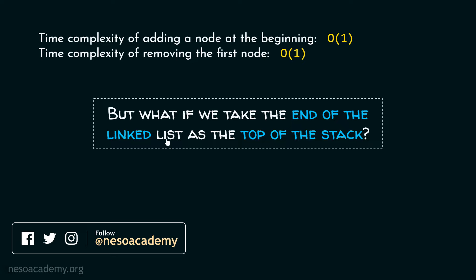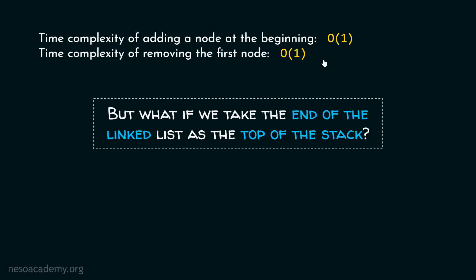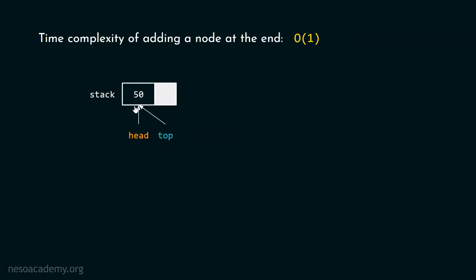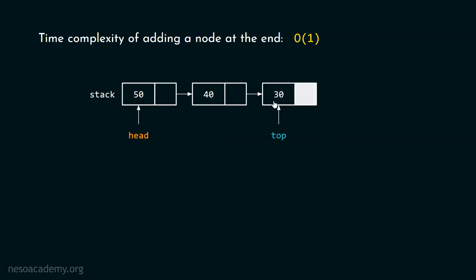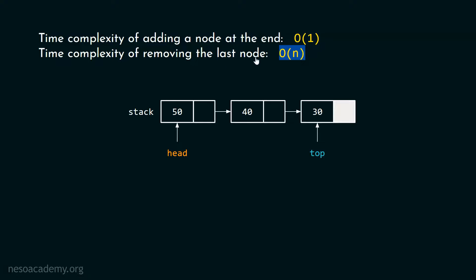But what if we take the end of the linked list as the top of the stack? Let's suppose this is the initial state and we add nodes at the end — the top pointer points to the last node. The time complexity of adding a node at the end takes O(1) time, since there is always a pointer pointing to the last node. But what about removing the last node? The time complexity of removing the last node is O(n), because it requires traversal.